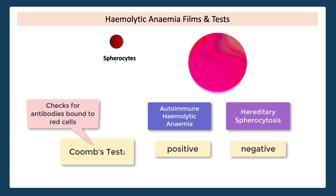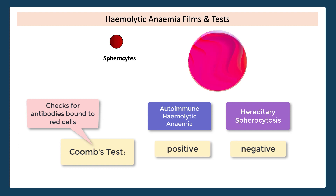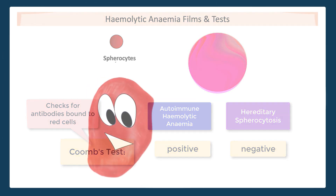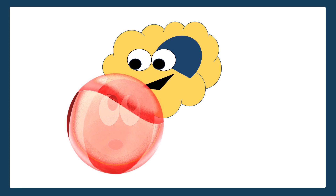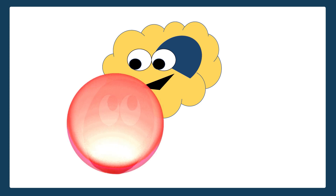If you are dealing with autoimmune hemolysis, this can be primary or secondary, warm or cold — and that is a whole different tutorial for another day. Some of you might be wondering why it is that these red cells with antibodies stuck to them become spherical. Immune cells will come by and nibble away at the sides of the blood cell, and overall those changes give it this spherical shape.